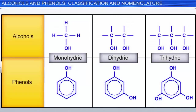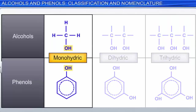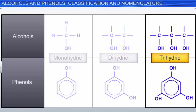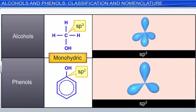Alcohols and phenols can be classified based on how many hydroxyl groups are present. Monohydric alcohols and phenols have one hydroxyl group. Dihydric alcohols and phenols have two hydroxyl groups, while trihydric alcohols and phenols have three hydroxyl groups. Monohydric alcohols can be classified on the basis of the nature of the carbon atom attached to the hydroxyl group, which is either sp3 or sp2 hybridized.